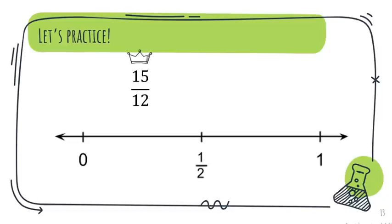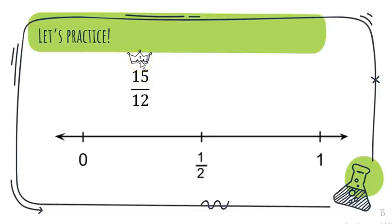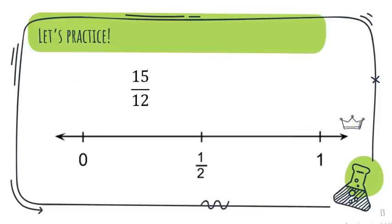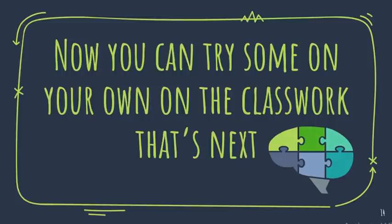The last one we're going to do together is fifteen-twelfths. My denominator is twelve, and my numerator is bigger than twelve, which means this one is actually greater than a whole. Now you can try some of your own on the classwork — that's next.